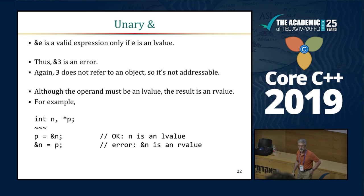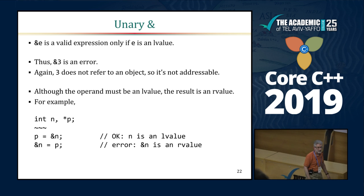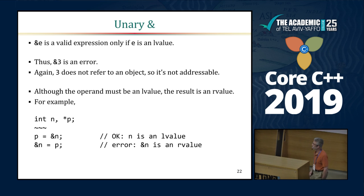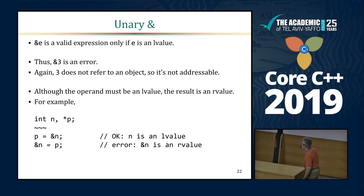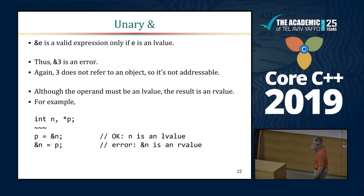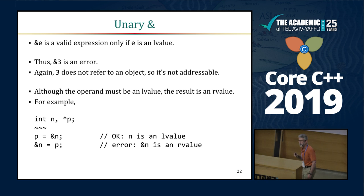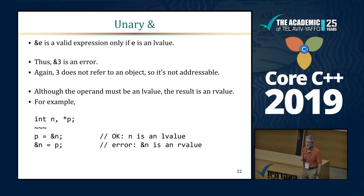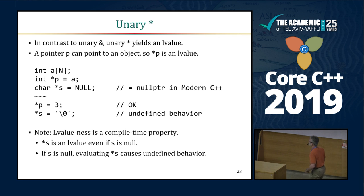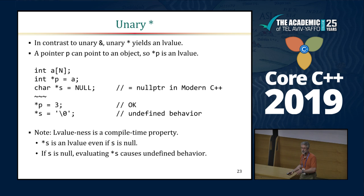The unary address-of operator requires its operand E to be an L-value — it can't be an R-value. That's why address-of 3 is an error: 3 doesn't refer to an object. Taking the address of n is perfectly okay because n used in that expression is an L-value. But the result of the whole address-of expression is an R-value, because it's putting the answer in a compiler-generated temporary, and you shouldn't be allowed to assign to that.